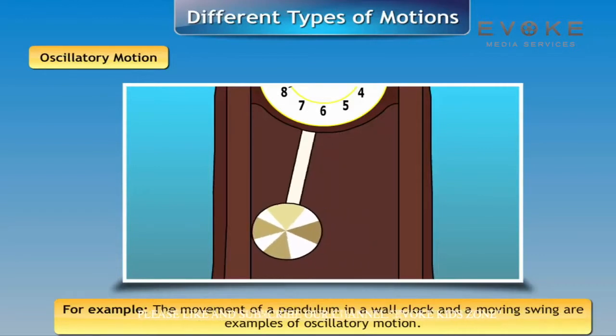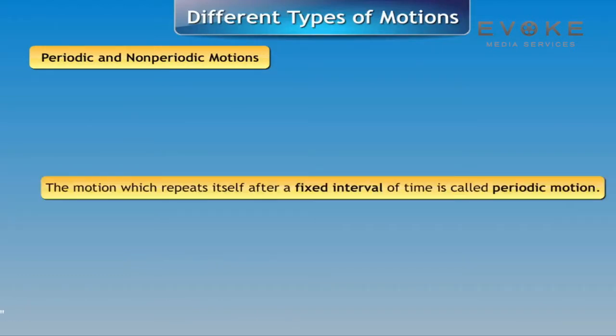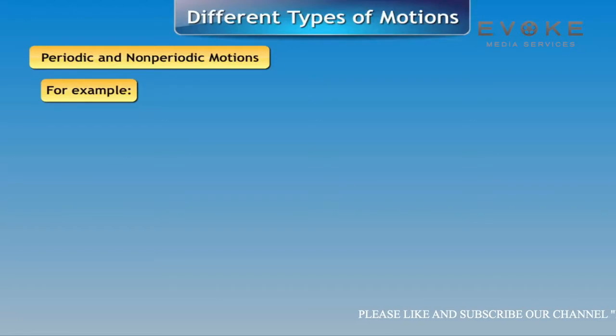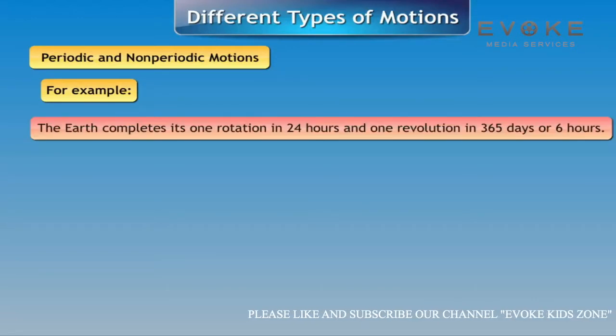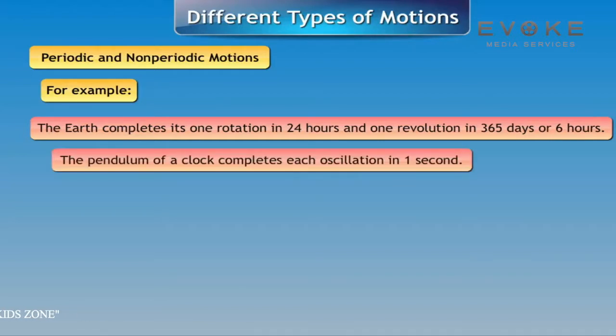Periodic and non-periodic motions: The motion which repeats itself after a fixed interval of time is called periodic motion. For example, the Earth completes one rotation in 24 hours and one revolution in 365 days and six hours. The pendulum of a clock completes each oscillation in one second.